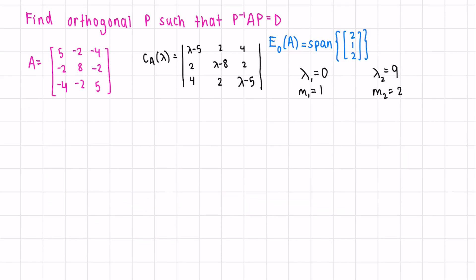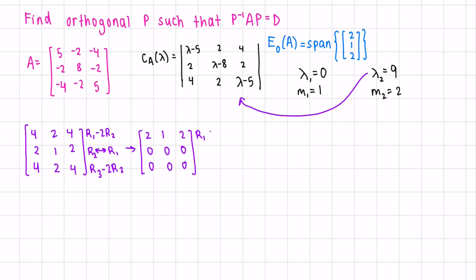Let's do the same for our second eigenvalue, nine. Row one minus two row two, row three minus two row two, and then we can switch the location of row one and row two, just so that our zero rows are on the bottom. Lastly, row one divided by two.